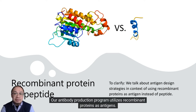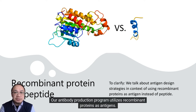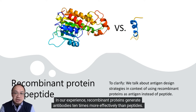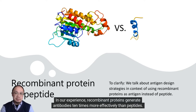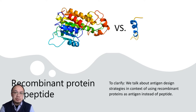Our antibody production program utilizes recombinant proteins as antigens. In our experience, recombinant proteins generate antibodies 10 times more effectively than peptides. We'll dive deeper into this in another video.